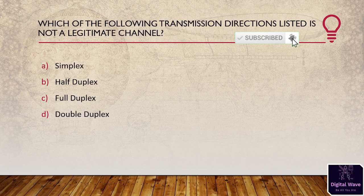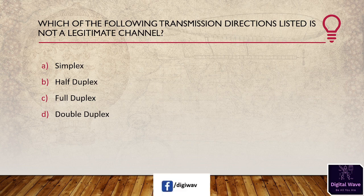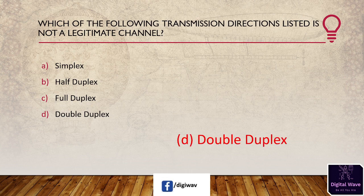Next question: which of the following transmission directions listed is not a legitimate channel? Options are: simplex, half duplex, full duplex, and double duplex. The answer is double duplex. Double duplex is not a legitimate channel for transmission in a computer network.